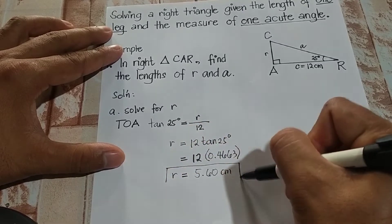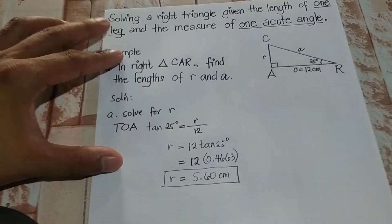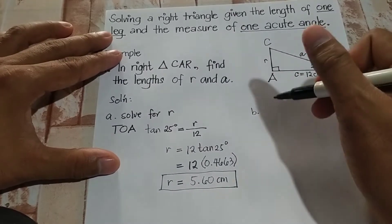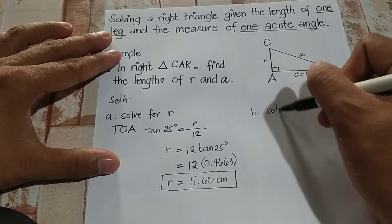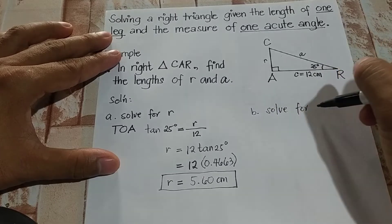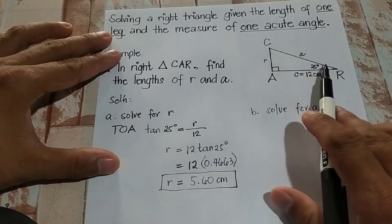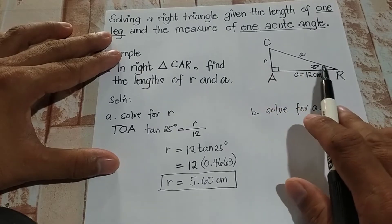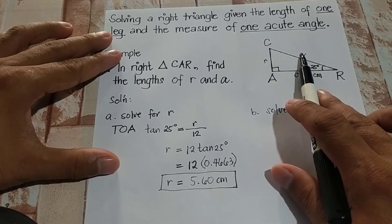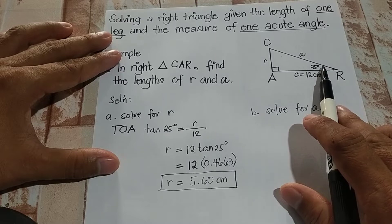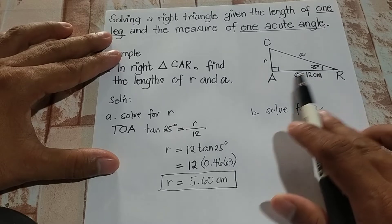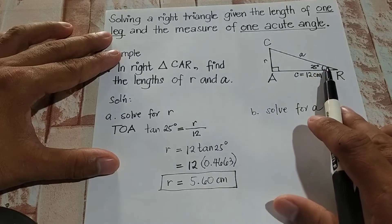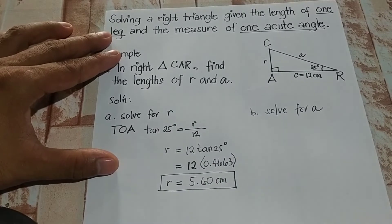So the length of side R is 5.60 centimeters. Now let's move on to side A. We have the angle and the given side C, which is the hypotenuse. Among the six trigonometric ratios, we can use adjacent over hypotenuse, and that would be cosine.